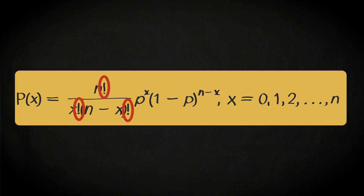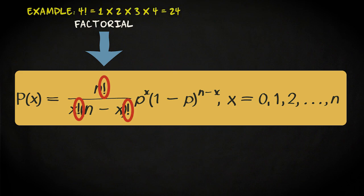This symbol, the exclamation mark, is not very frequently used. It's called factorial and is shorthand for multiplication of all integers up to the number specified. For example, 4 factorial is shorthand for 1 times 2 times 3 times 4.